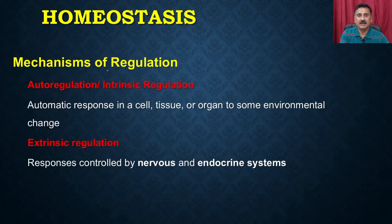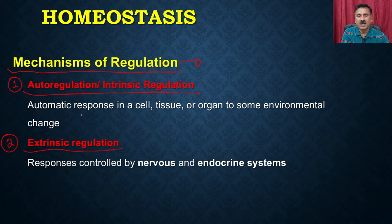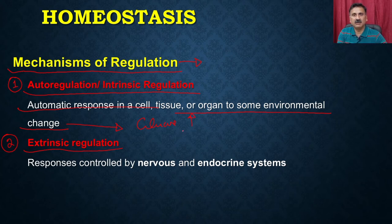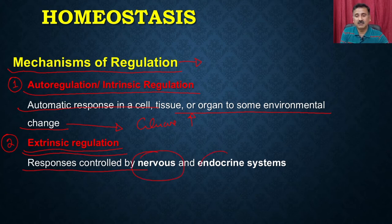How does homeostasis happen? It actually has a mechanism of regulation. How will the body know that there is a change in the glucose level, amino acids, or fatty acid level? It can have two different types of mechanisms: auto regulations or intrinsic regulations, or it can have extrinsic regulations. In auto regulations, there is an automatic response in a cell, tissue, or organ to environmental changes. Extrinsic regulations are controlled by the nervous system or the endocrine system.